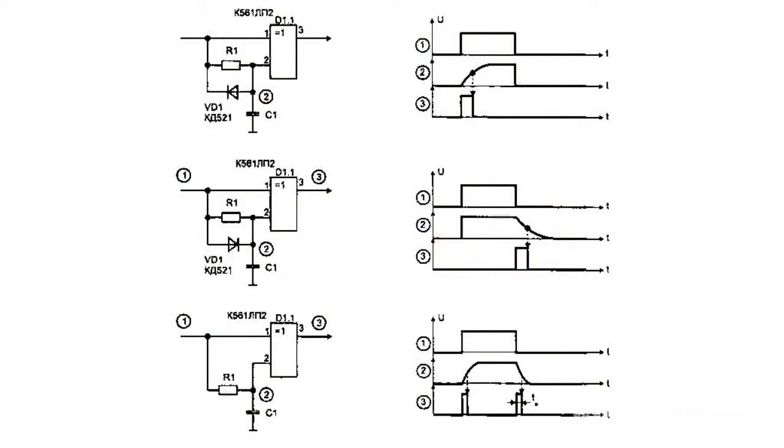A pulse shaper is an electric device for generating and transforming electric pulses. The pulses are usually square wave, trapezoidal and linear varying — that is, triangular and exponential.